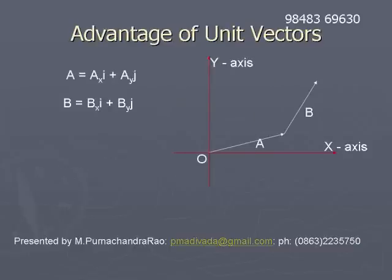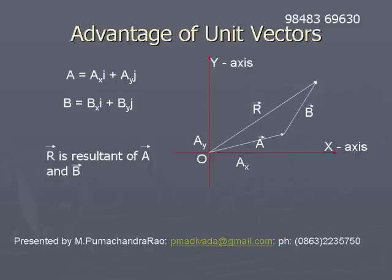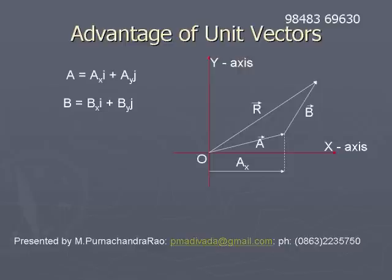Advantage of unit vectors: consider two vectors ā and b̄. We construct ā plus b̄ — ā is represented from the origin, b̄ is constructed at the head of ā, and the resultant vector r̄ goes from the tail of ā to the head of b̄. The components of ā are shown as ax and ay. A vertical dotted line from the head of ā gives ax along x, and ay is its distance from the x-axis along y.